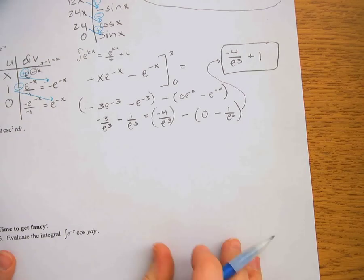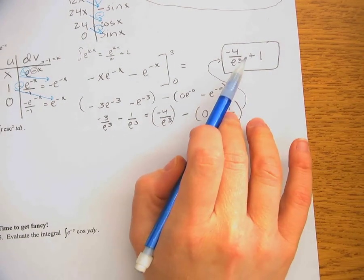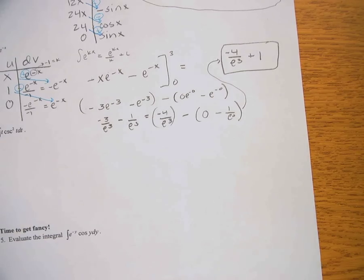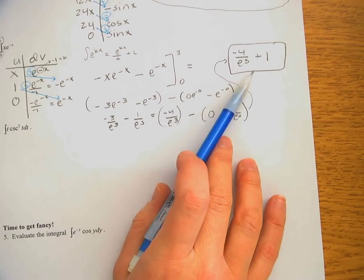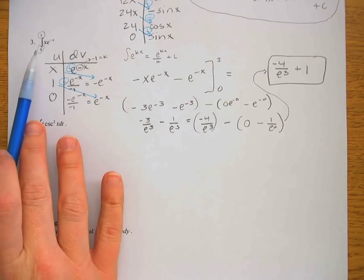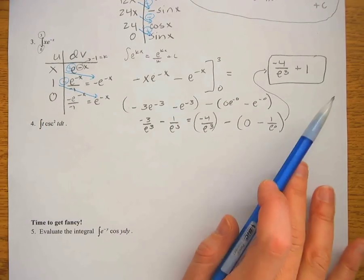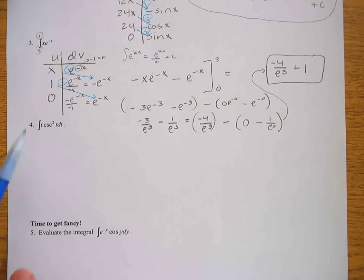Since this is non-calculator, we leave the answer as −4/e³ + 1. There's no plus C because this is a definite integral — the answer is an actual number, not an antiderivative. The next two examples are a bit trickier and will be covered in video number two.